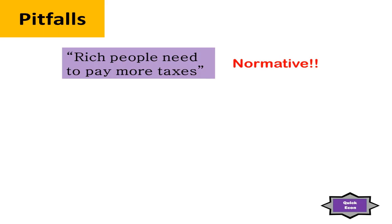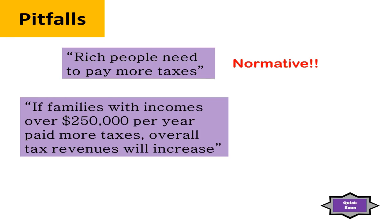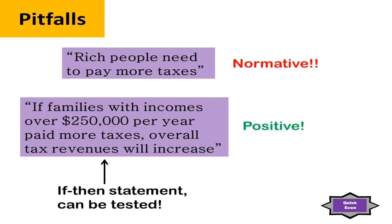Now if you were to rewrite that statement to say, if families with incomes over $250,000 per year paid higher taxes, overall tax revenues would increase — that is a positive statement. You can look at what happens to tax rates and tax revenues, you can see the relationship over time. It's a statement that you can test with data.